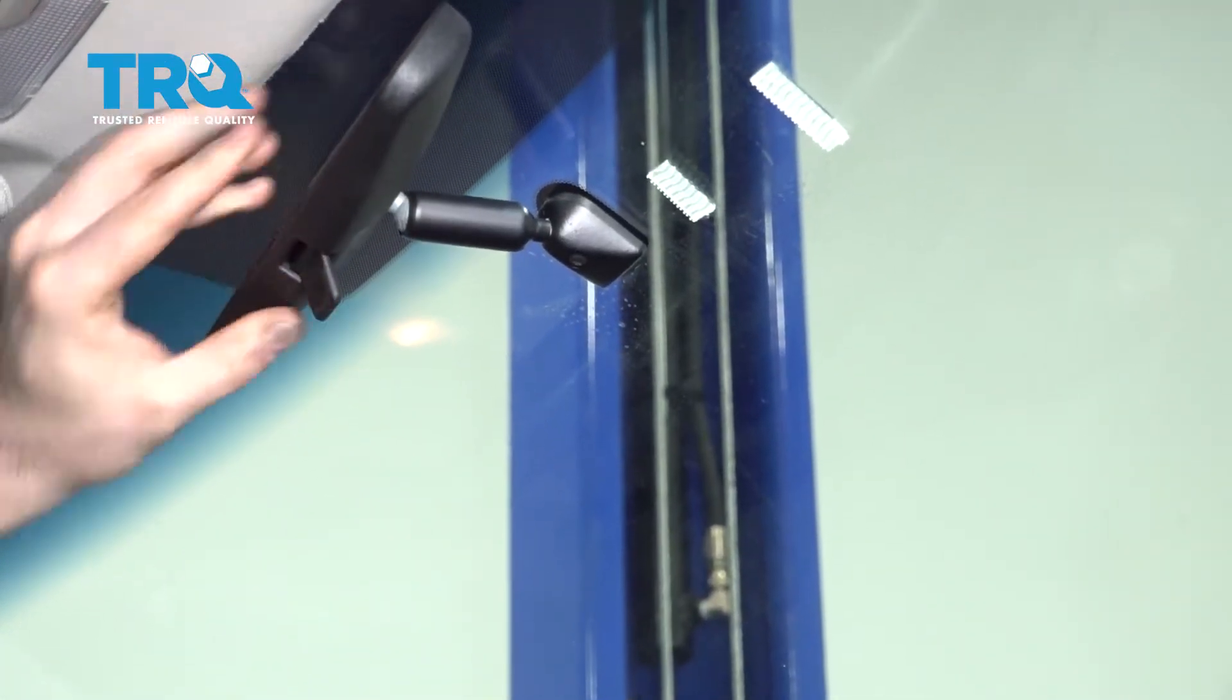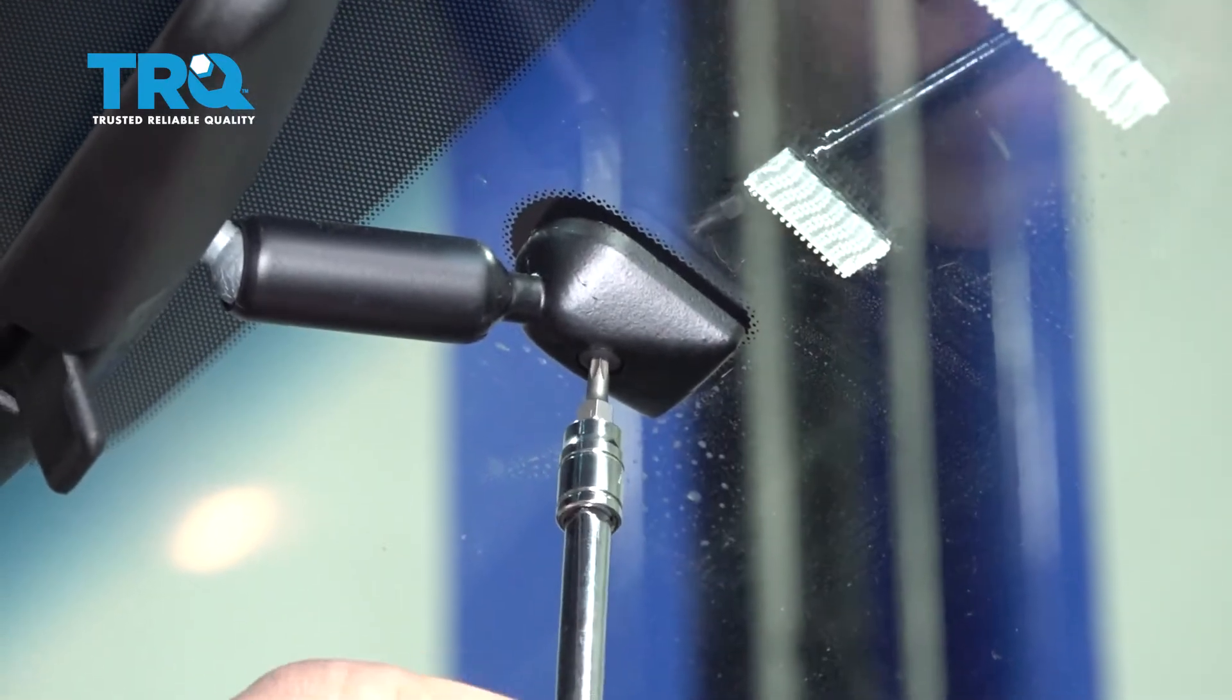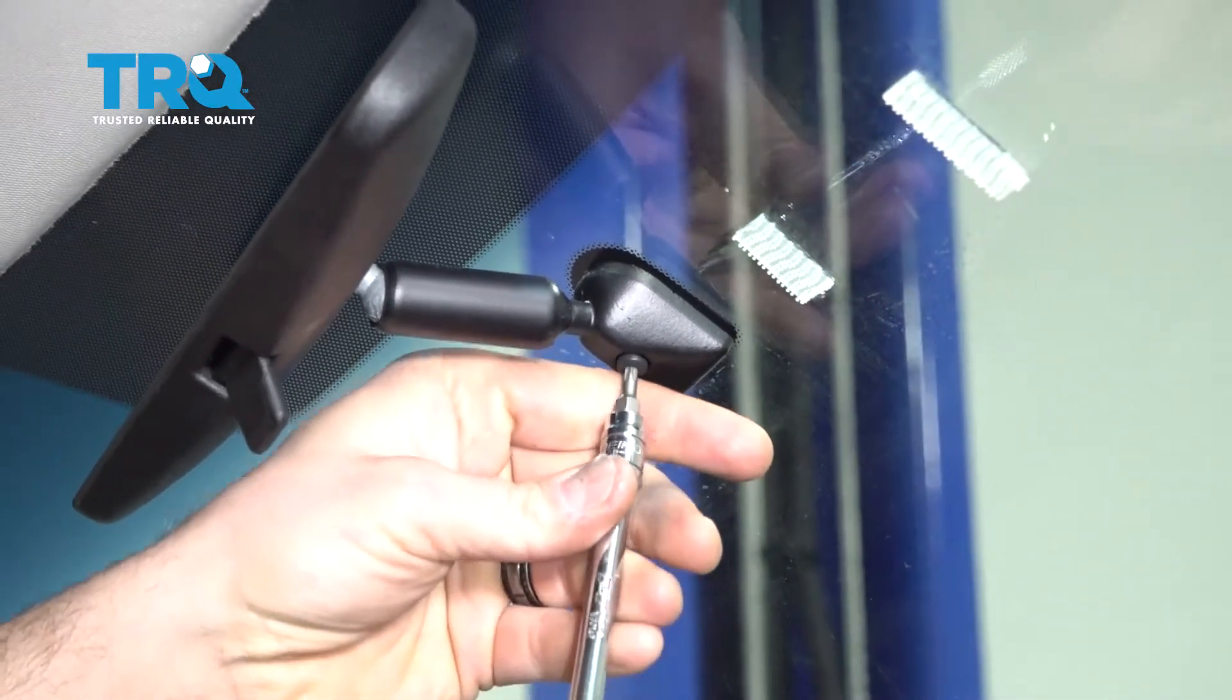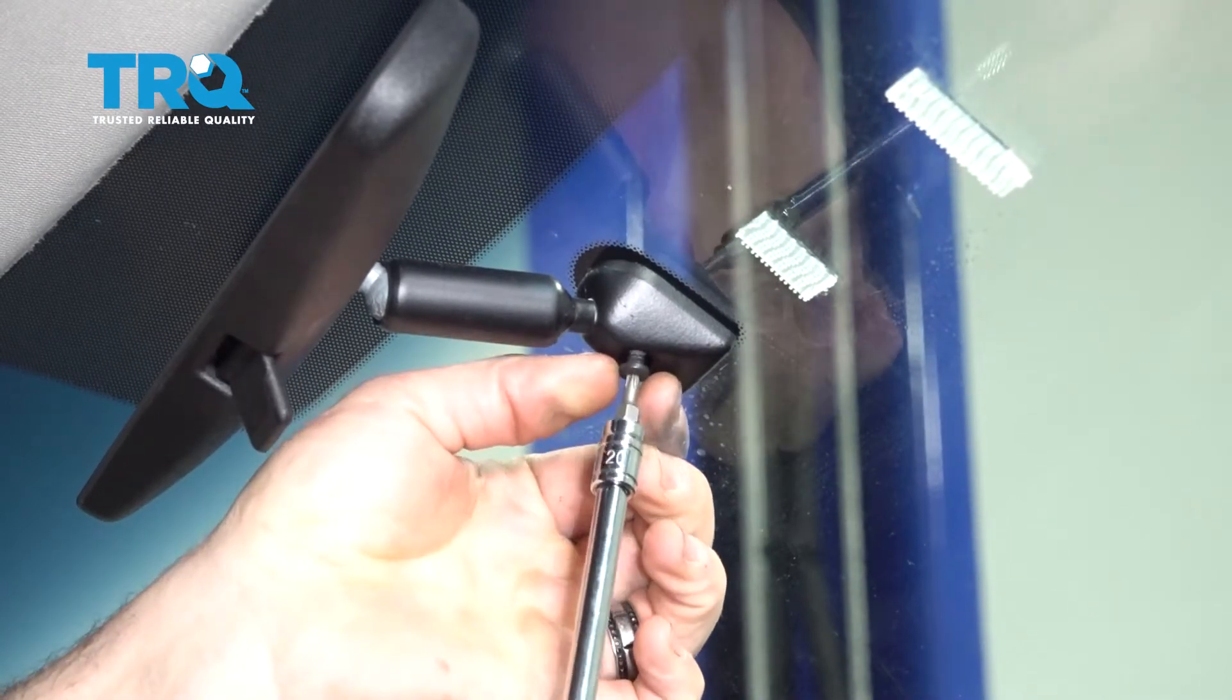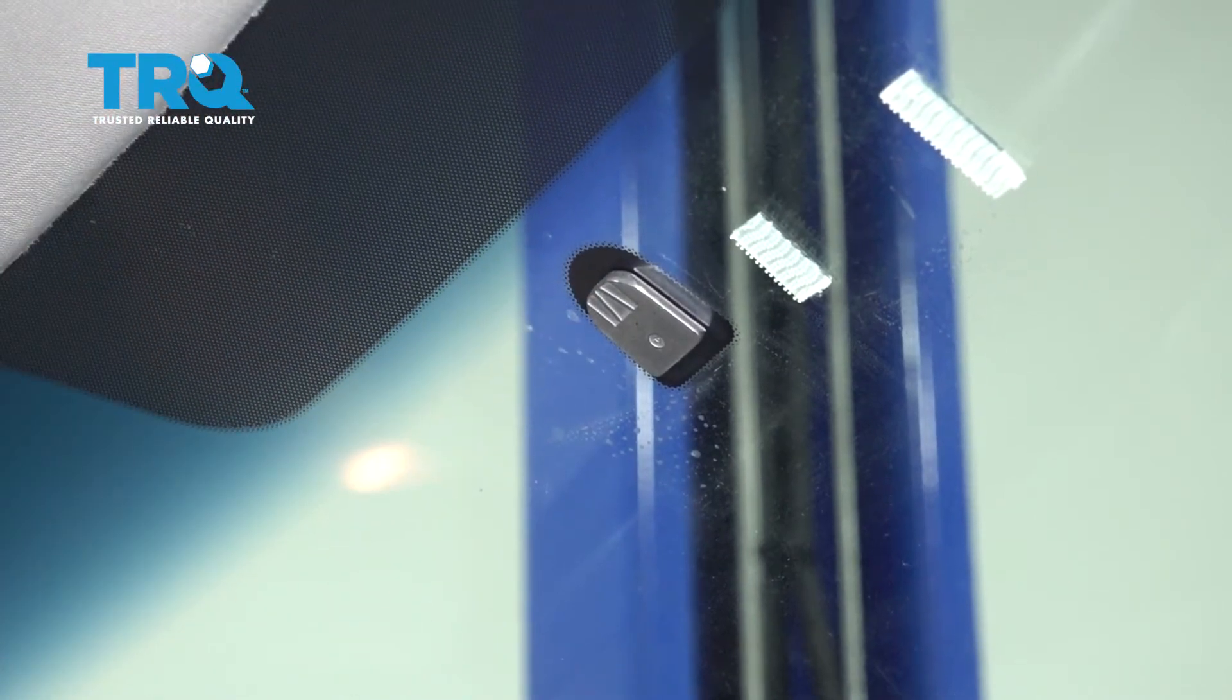Go ahead and grab your mirror, flip it upward, use a T20 Torx bit, remove that screw. Grab the mirror, slide up and out of the way.